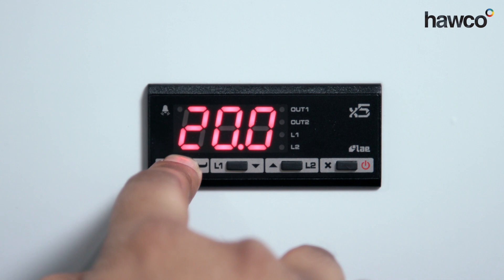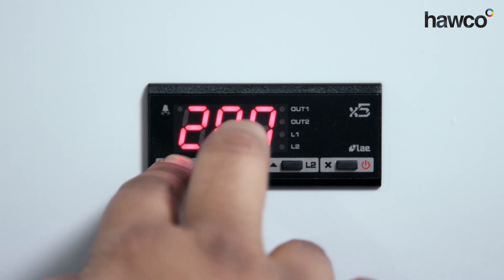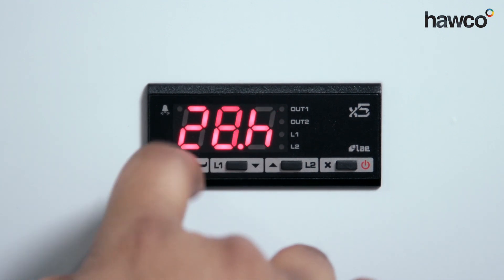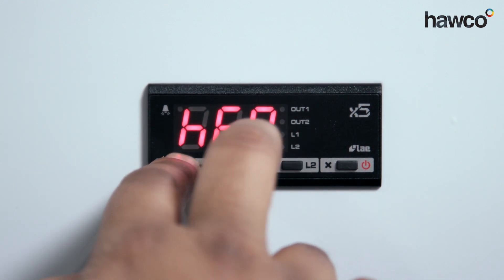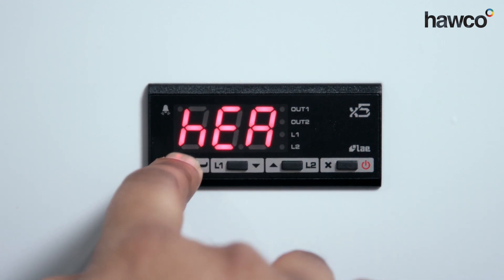So 2SP is our second set point. On this one, we're going to leave it at 20 degrees. The next one is 2CH. This time, we have to make sure we set this to heating. And it can be changed up and down on the up and down buttons.